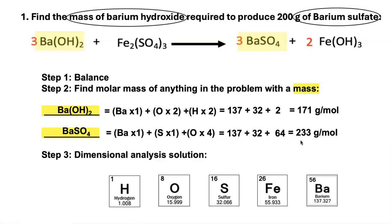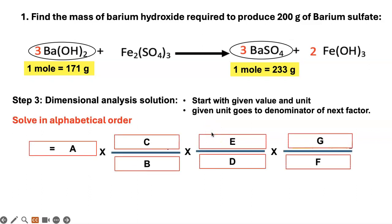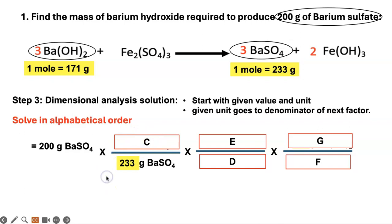Now we go to the dimensional analysis solution. The problem deals with barium hydroxide and barium sulfate, and you're going to have three moles and three moles in the balanced equation. We start with the given value, which is 200 grams of barium sulfate. Then we set up factor B: grams of barium sulfate in the denominator. Using the molar mass, one mole is equal to 233 grams, so you put 233 grams of barium sulfate in the denominator and one mole of barium sulfate in the numerator. Now you can cancel out grams of barium sulfate.